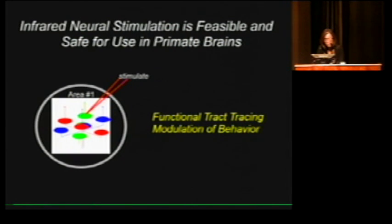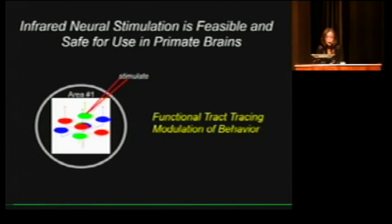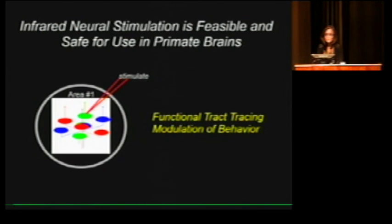To summarize: the cortex is modular, there are networks of these modules, and we want to trace these networks using INS stimulation. This seems feasible for tracing in vivo networks and for inducing predictable behavior. We hope this can become a tool for clinical use and perhaps for brain-machine interfaces. Thank you very much.